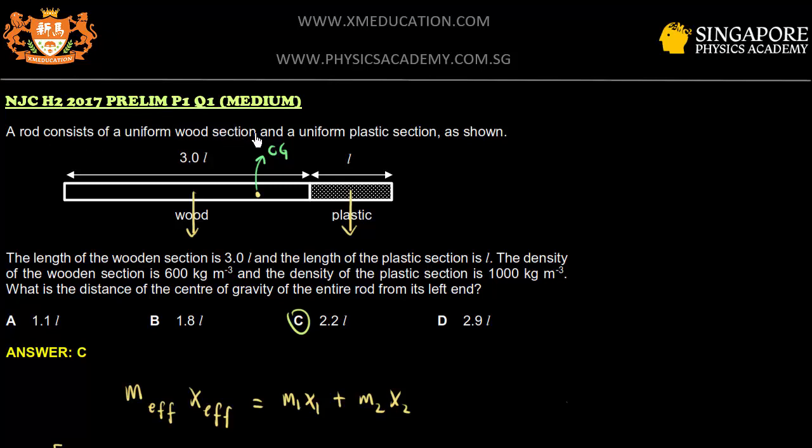A rod consists of a uniform wood section and a uniform plastic section as shown. The length is 3, this is L. Density of this is 600. Density of plastic is 1,000. What is the center of gravity from this end here of the wood? They want you to find from here to here. They want you to find the distance or horizontal distance from here to here.